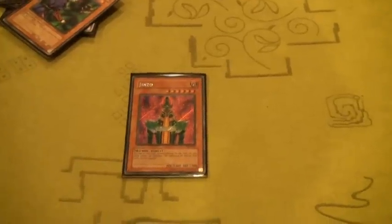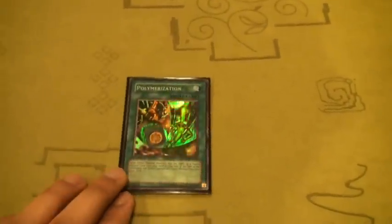And then finally, a Jinzo, just cause Jinzo is helpful in every deck. So those are the monsters. For the Magic cards, I have one Polymerization.